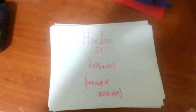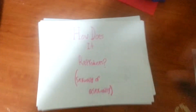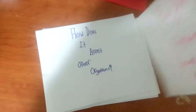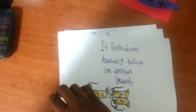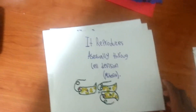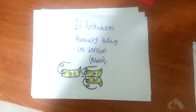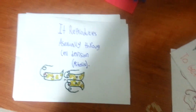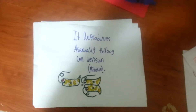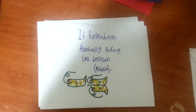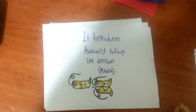So how does it reproduce? Sexually or asexually? Now, the answer is asexually, through cell division, splitting itself into two identical DNA pieces.